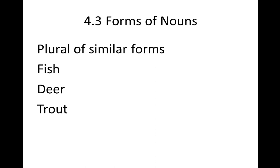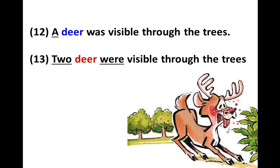Some strange forms are the same for both singular and plural — like 'fish,' 'deer,' and 'trout.' For example: 'A deer was visible through the trees' and 'Two deer were visible through the trees.' This is unusual for Brazilians because we expect an '-s' for plural — it is strange to see the same word used for both singular and plural.